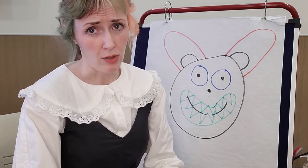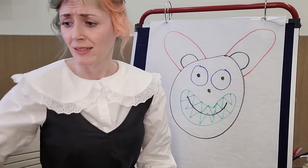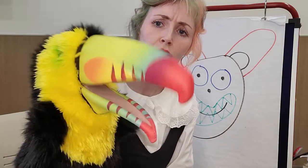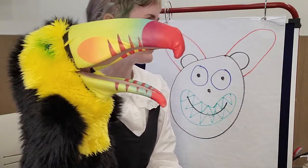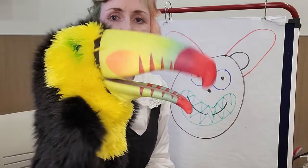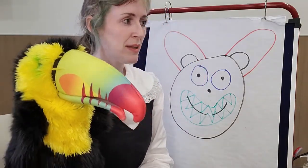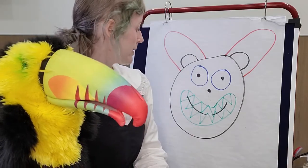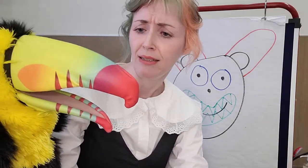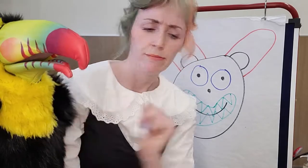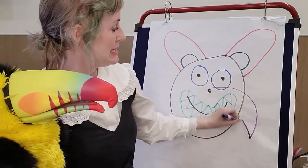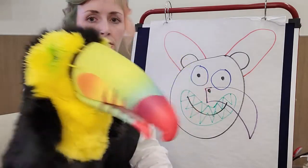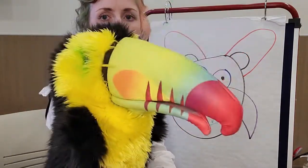As Monkey walked along, they ran into another friend — this friend was flying in the air. It was a Toucan! "Good likeness," said Toucan, "but the nose is almost invisible. Unforgettable." "I guess so. Yeah, let's see. Hmm. And a little bit like this. And like that. How's that?" "Unforgettable! Unforgettable!"